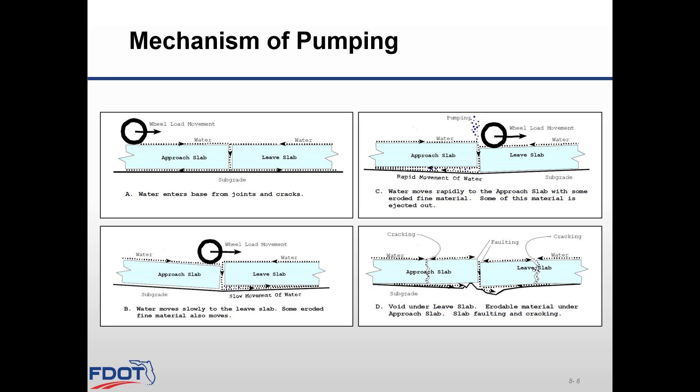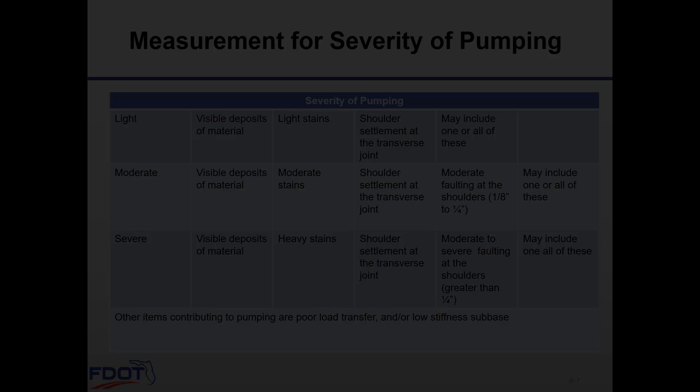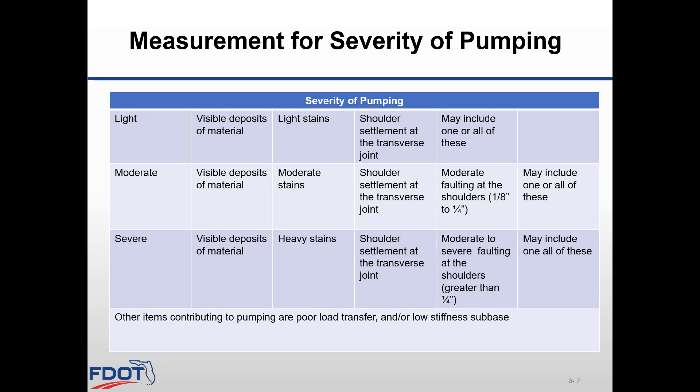The final result is a void under the leave slab and possible buildup of material under the approach slab. The void creates a cantilever effect on the concrete pavement, resulting in cracking and faulting of the slab, as shown in Figure D. The severity of pumping is measured in terms of light, moderate, and severe, as shown in the table.